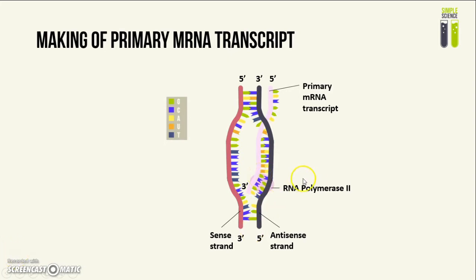Here we can see an RNA polymerase 2 enzyme working from one direction to the other, assembling nucleotides onto the primary mRNA transcript.